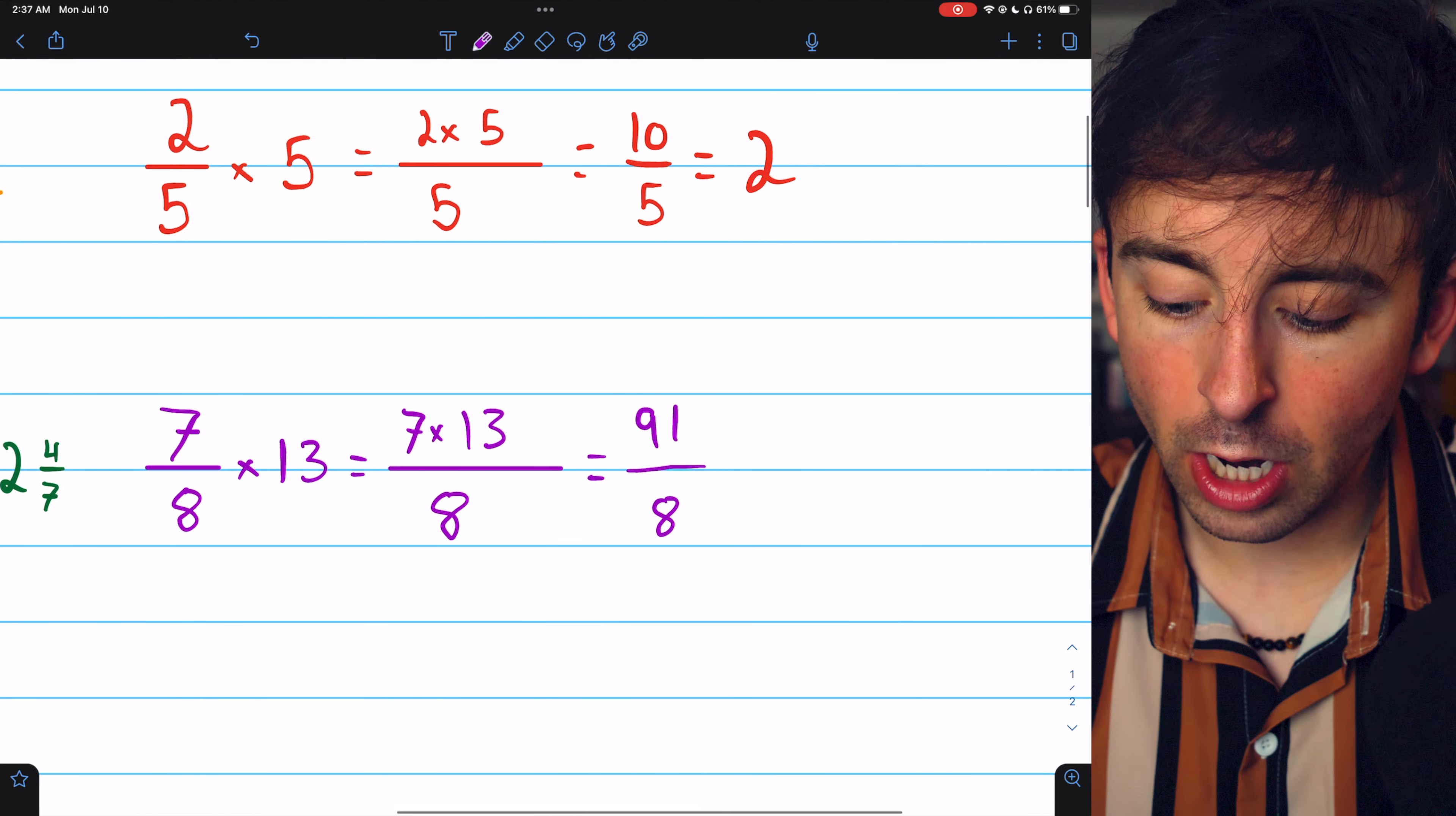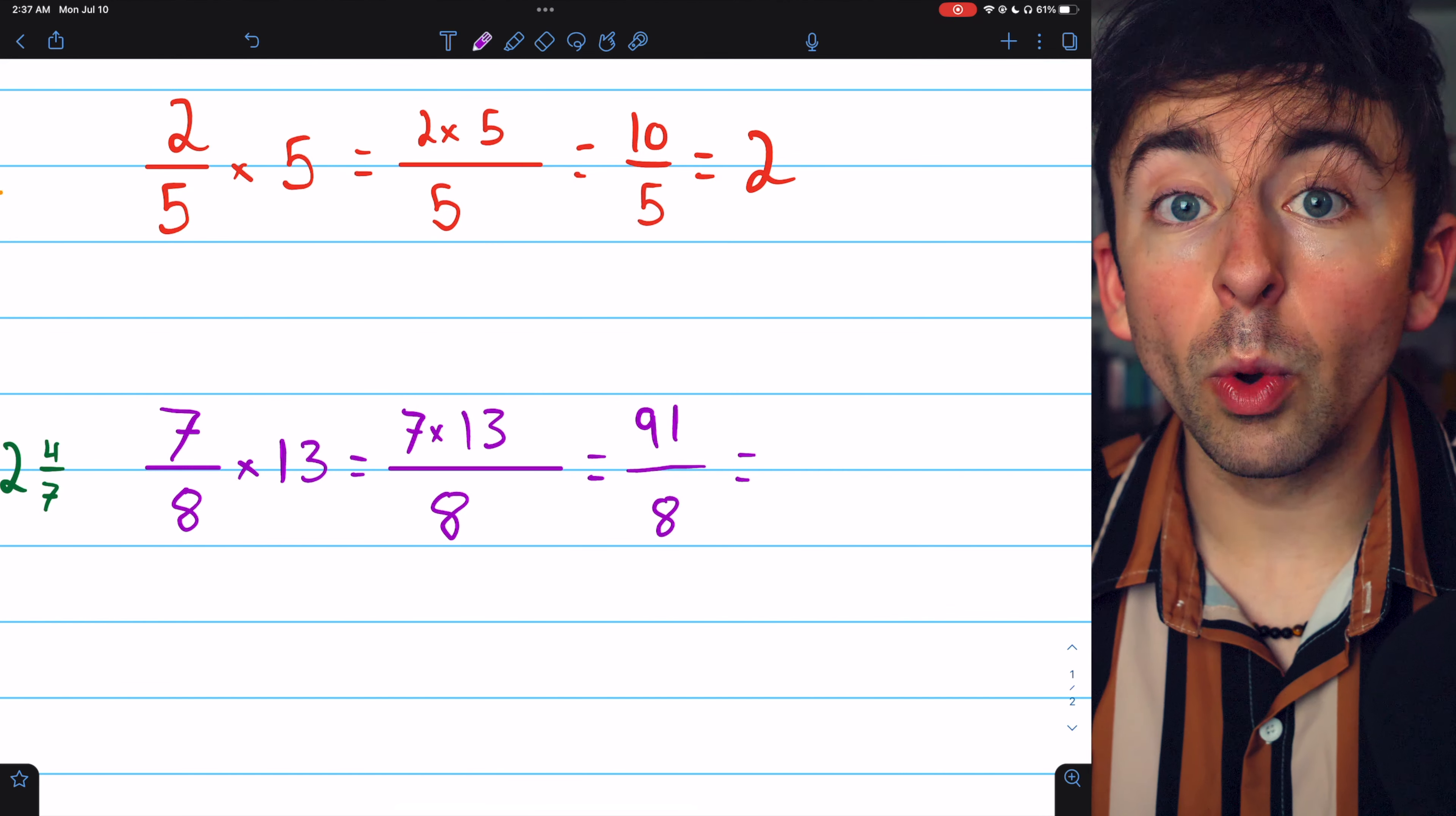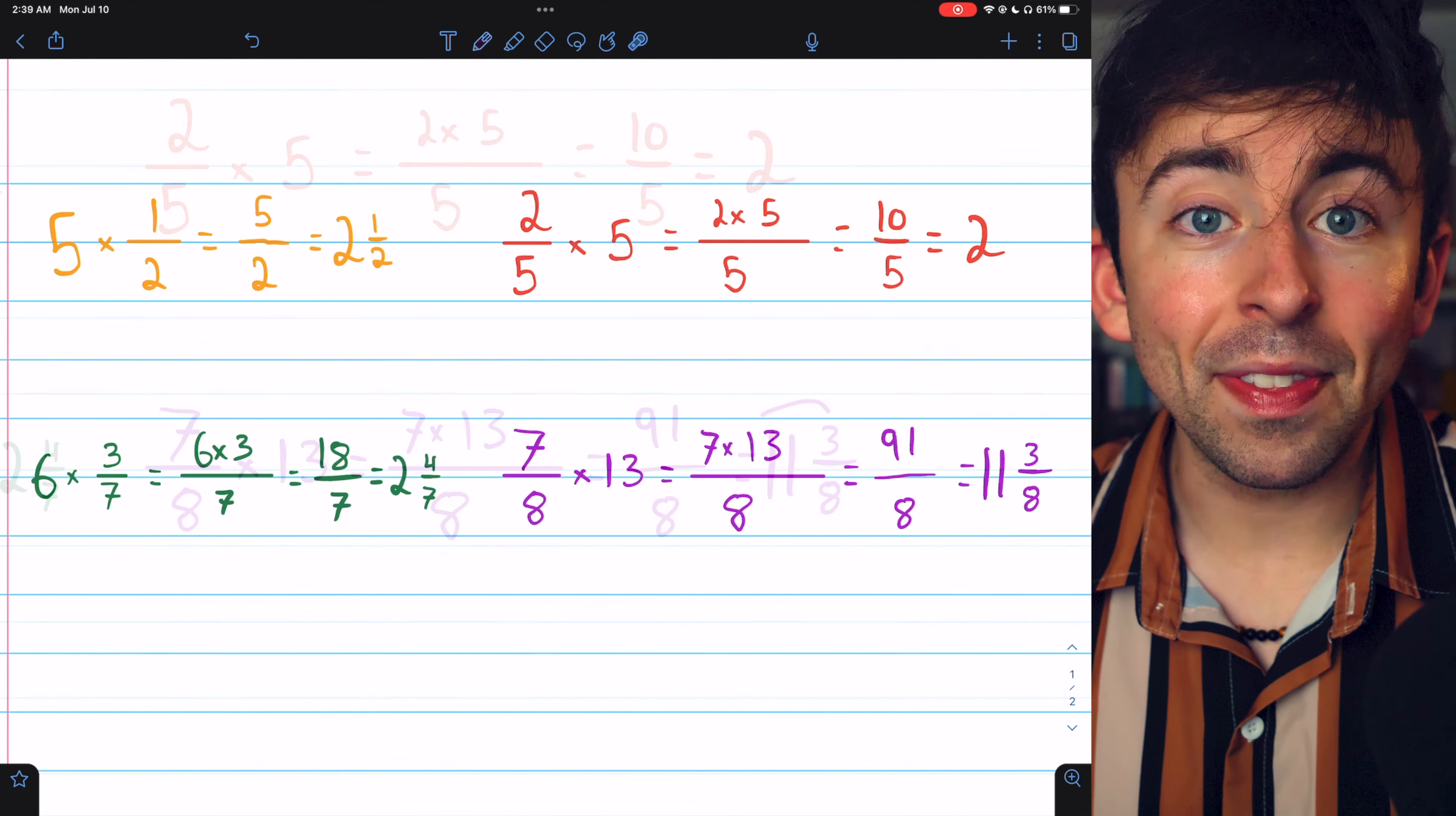If we want to write this as a mixed number, we ask how many times does 8 go into 91? Well, certainly 8 goes into 88 11 times, and that leaves 3 eighths left over. And that's it.